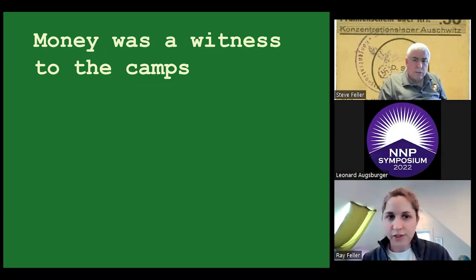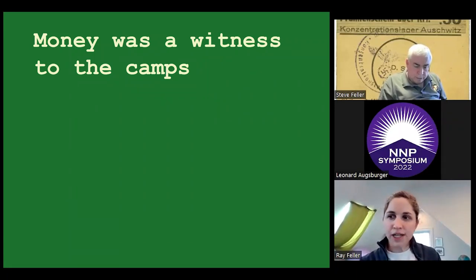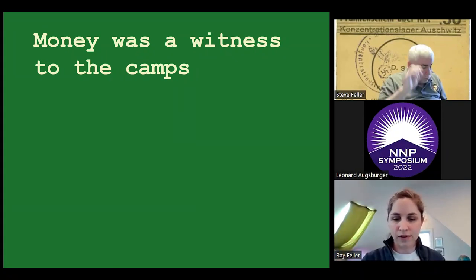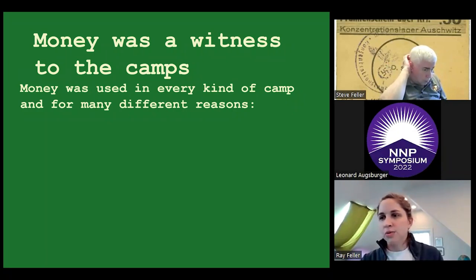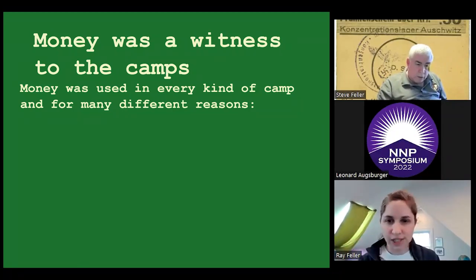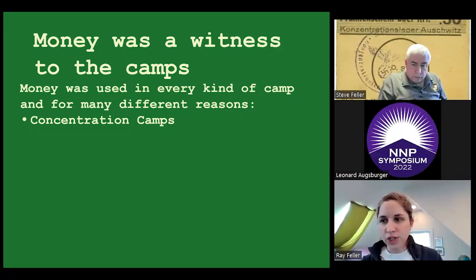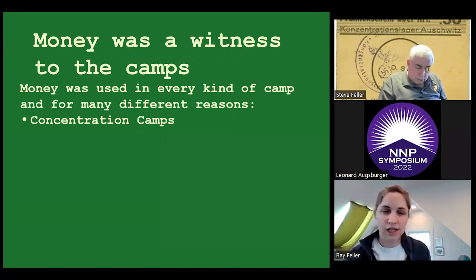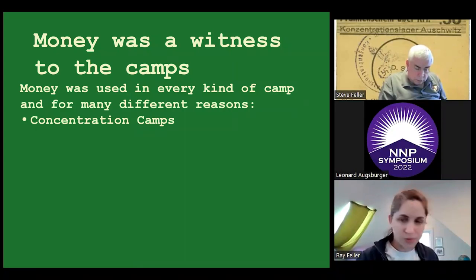Our book is called Silent Witnesses, Civilian Camp Money. We think the word 'witness' is really important because this money, when you hold it in your hand, you're holding something that was actually there and can tell part of this story about what was happening and what it was like for the people. There was money used in every type of camp in World War II, and there were a lot of different reasons it was used. In the concentration camps, sometimes it was used as an incentive to get people to work harder. There were some limited ways people could spend the money — to get extra rations, materials to write home, soap, things like that.